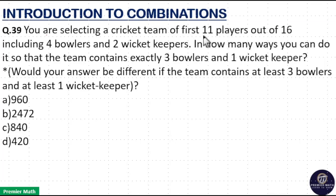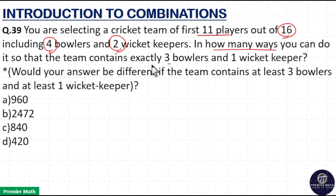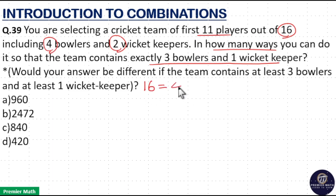You are selecting a cricket team of 11 players out of 16, including 4 bowlers and 2 wicket keepers. The available players are 16, out of which 4 are bowlers and 2 are wicket keepers, so the remaining are 16 minus 6, which is 10 other players.